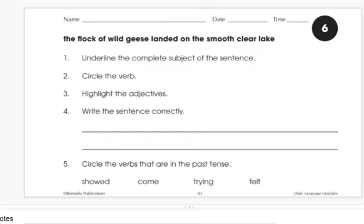Okay, this is grammar warm-up number six. Follow along and make your corrections as we go. Our sentence: the flock of wild geese landed on the smooth, clear lake.